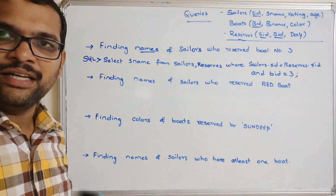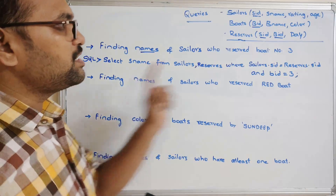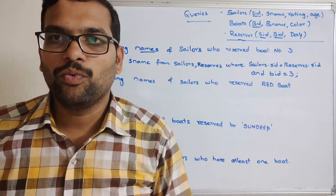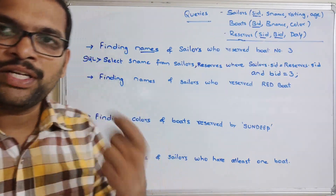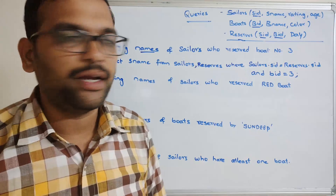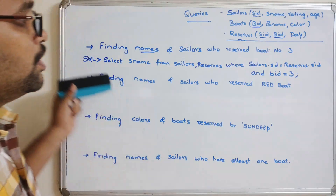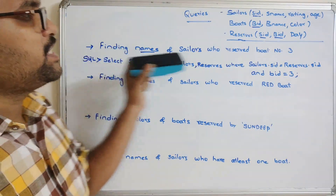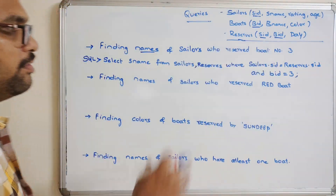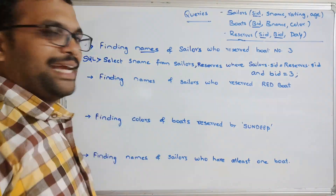This query gives all the sailor names who reserved boat number three, since more than one sailor can reserve the same boat.